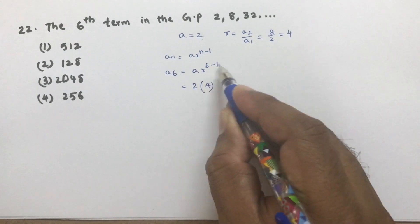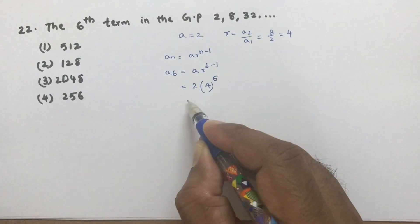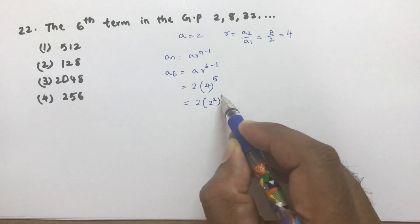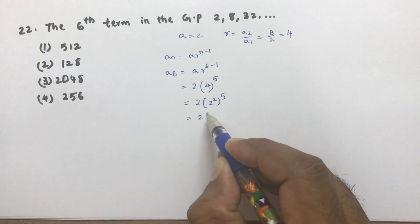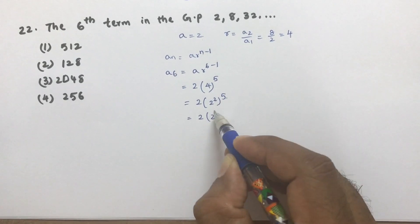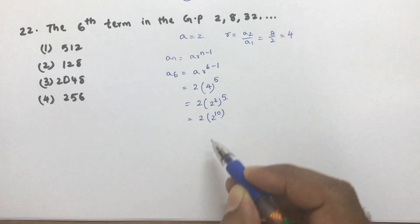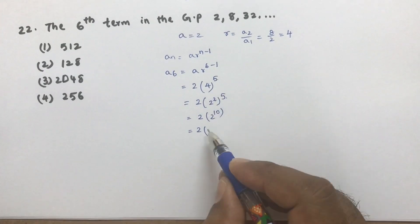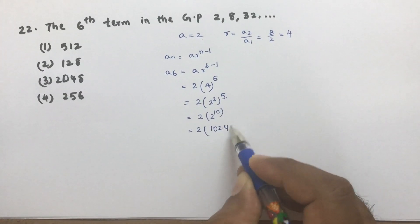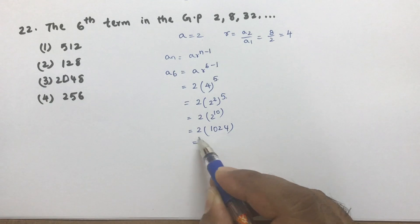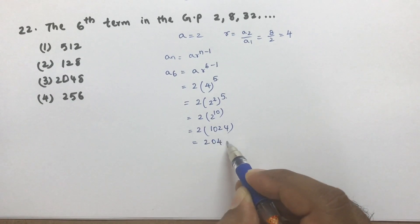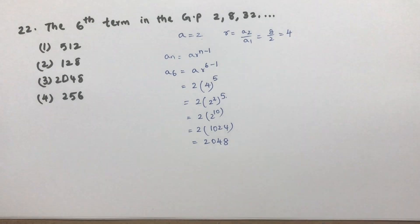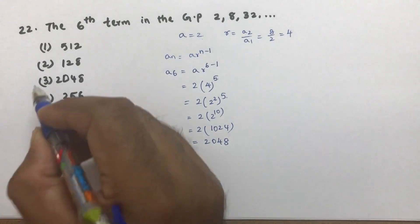So the sixth term is 2 × 4^5. You can write 4 as 2², so this becomes 2 × (2²)^5 = 2 × 2^10 = 2^11. Directly calculating, 4^5 = 1024, and multiplying by 2 gives 2048. So the sixth term in the GP is 2048 and the correct option is 3.